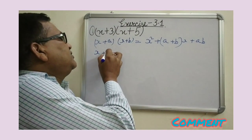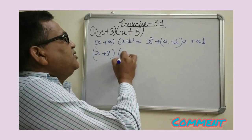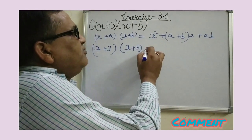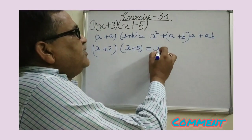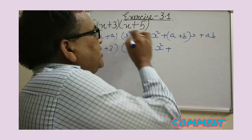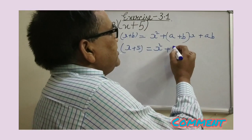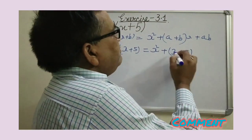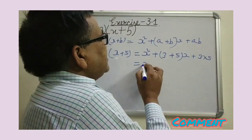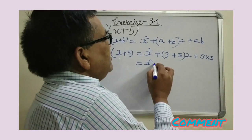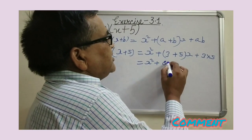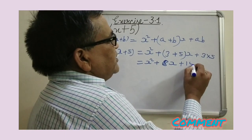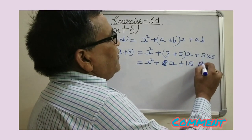For example, x plus 3 into x plus 5. Using the identity, a is replaced by 3, b is replaced by 5. We get x squared plus 8x plus 15. This is the final answer.